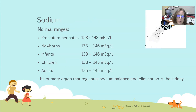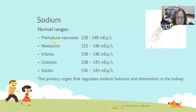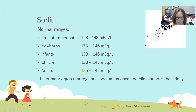Let's start with sodium. The normal ranges: in premature neonates, a normal sodium can be anywhere from 128 to 148 milliequivalents per liter — a much wider range compared to adults. In newborns, it is 133 to 146. In infants, it's 139 to 146. In children, 138 to 145. And in adults, 136 to 145, with some labs using 135 to 145.